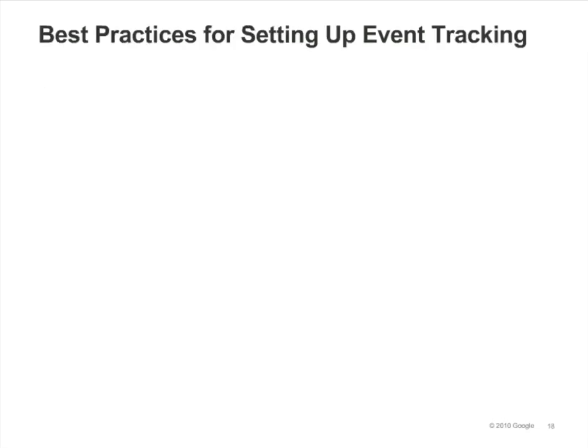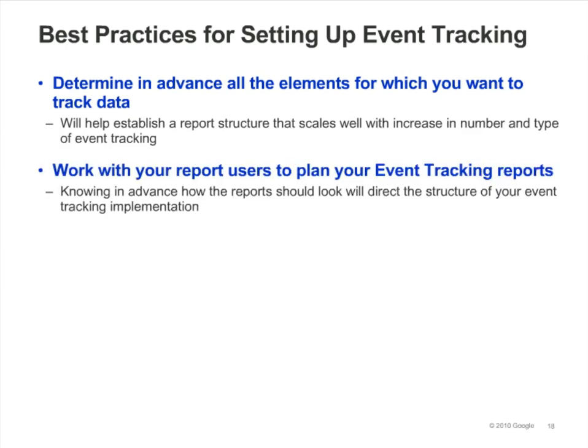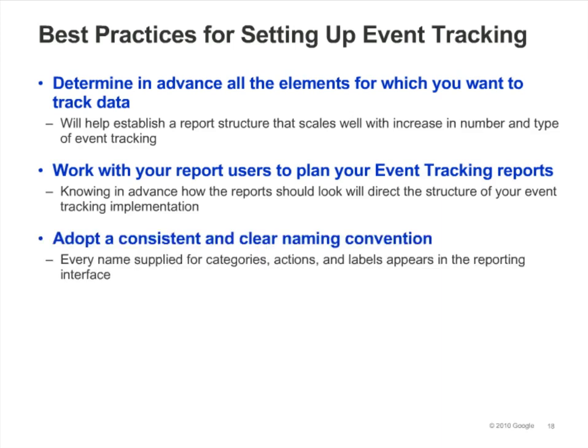As we mentioned earlier, the arguments you provide when you call trackEvent will govern how events are organized in your reports. So before you add the calls to trackEvent to your site, consider these best practices. First, determine in advance all the kinds of events you'll want to track. Try to create a hierarchy of categories, actions, and labels that will grow with your needs. Work with your report users to make sure that the hierarchy makes sense, and use a clear, consistent naming convention for your categories, actions, and labels. Finally, note that a maximum of 500 events per visit will be tracked, so avoid tracking highly repetitive events such as mouse movements.